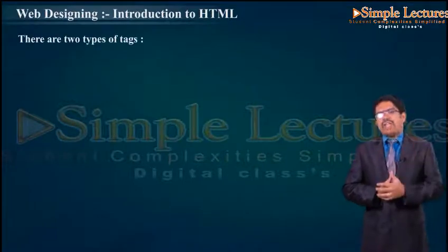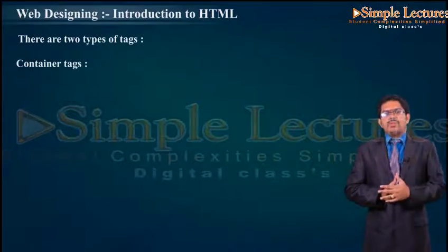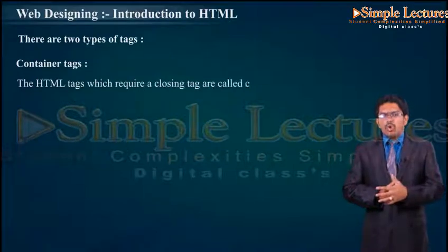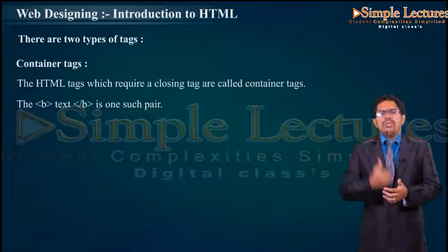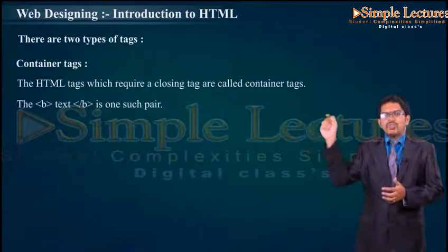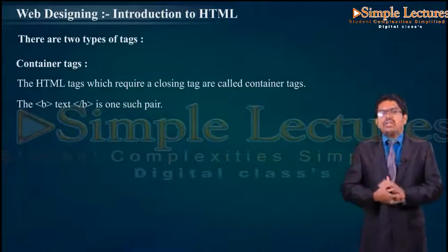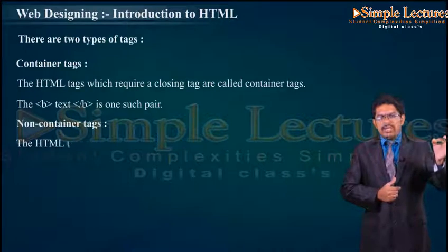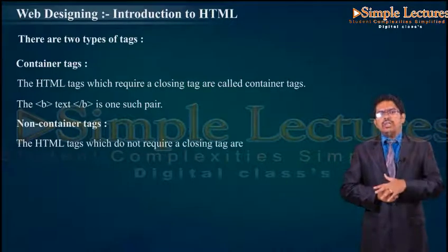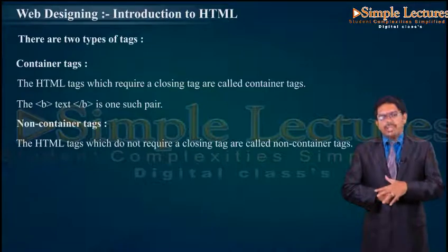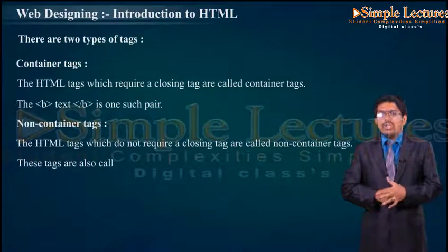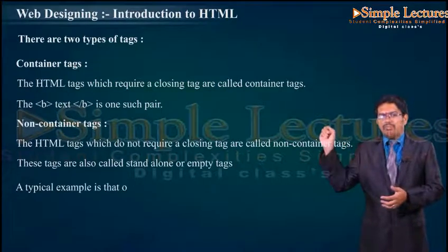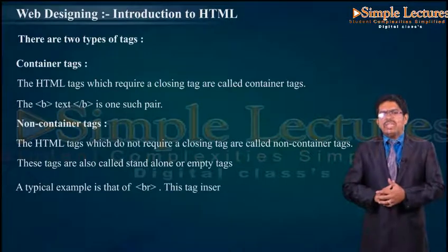There are two types of tags. First: container tags — HTML tags which require a closing tag are called container tags. Example: &lt;b&gt;&lt;/b&gt; is one pair called a container tag. Non-container tag: HTML tags which do not require a closing tag are called non-container tags. These are called stand-alone or empty tags. Example: &lt;br&gt; — this tag inserts a line break.